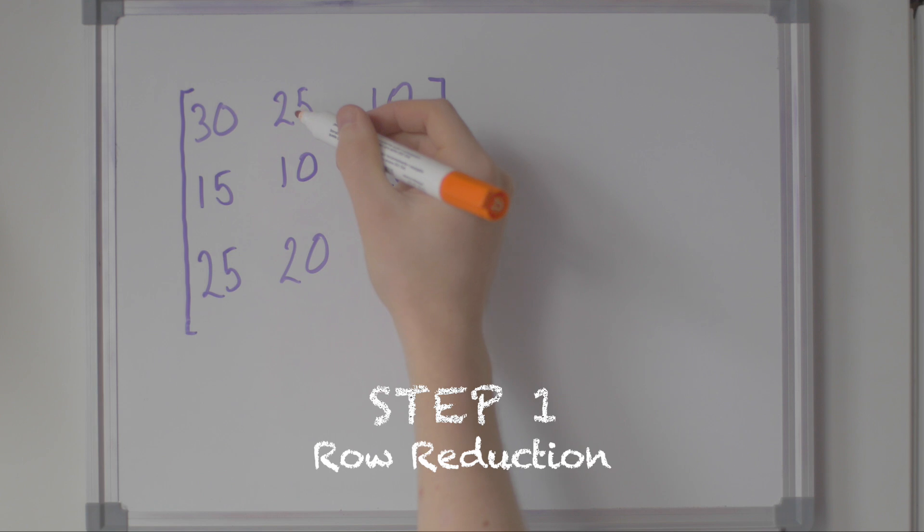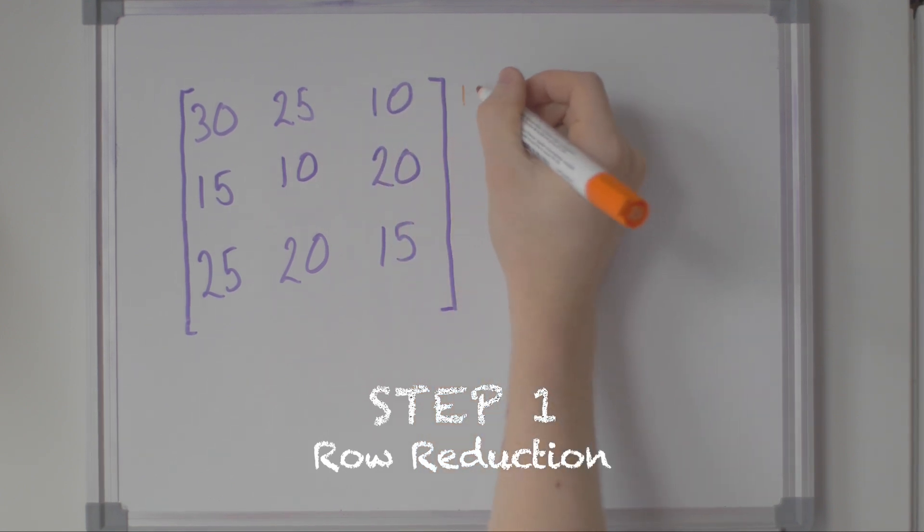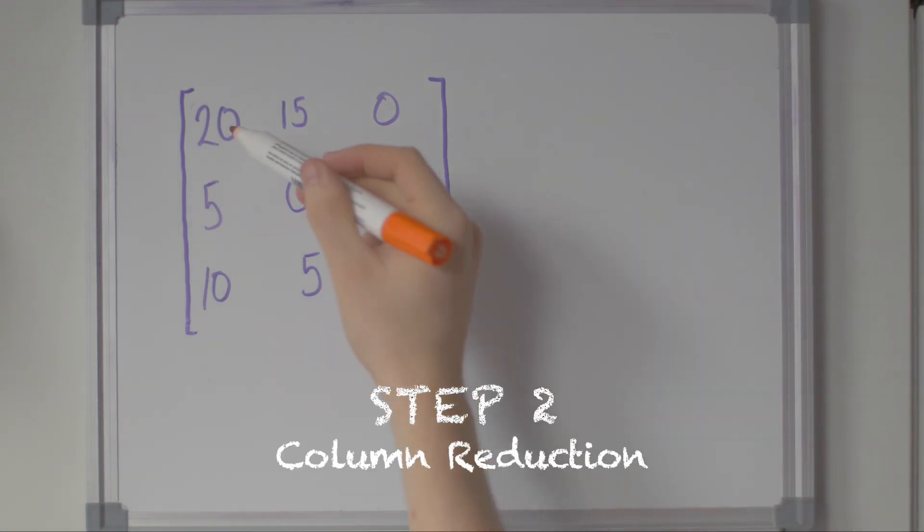Step one: row reduction. Subtract the row minimums from each row's values. Step two: column reduction. Subtract the column minimums from each column's values.